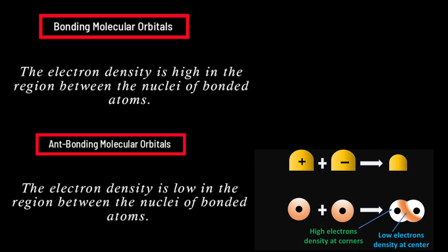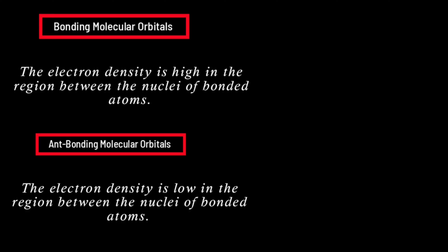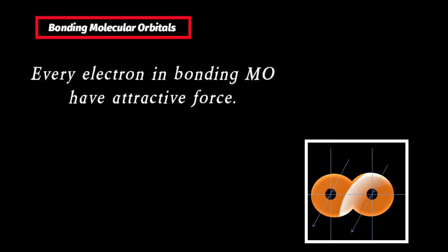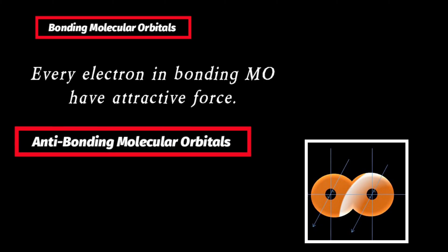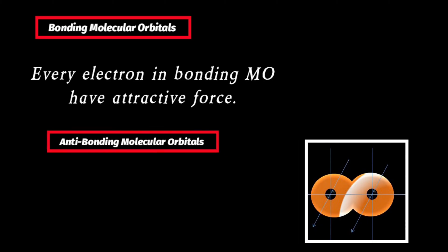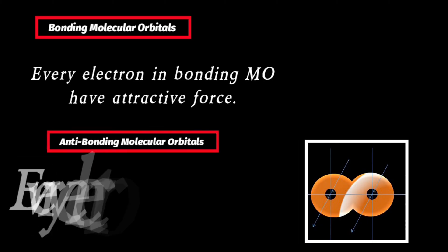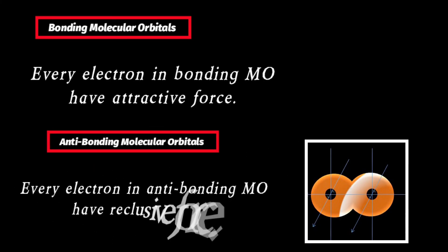Now let us consider the fifth difference. Every electron in the bonding molecular orbital experiences an attractive force, while every electron in the anti-bonding molecular orbital experiences a repulsive force.